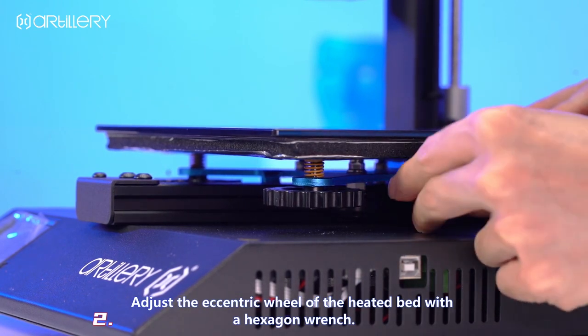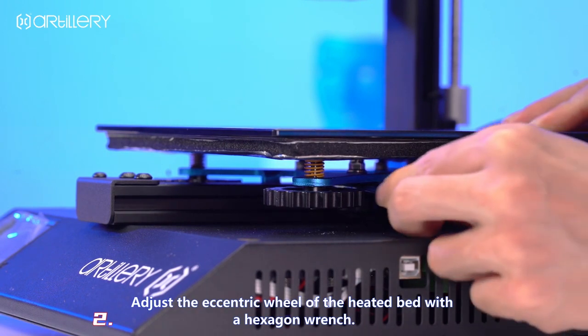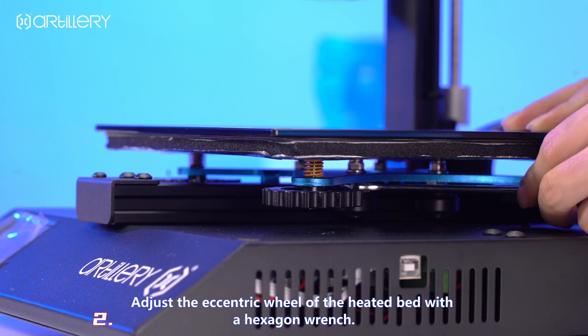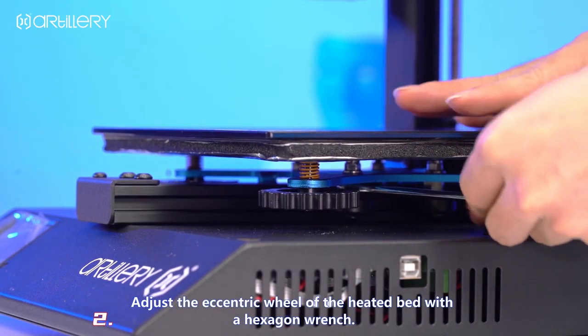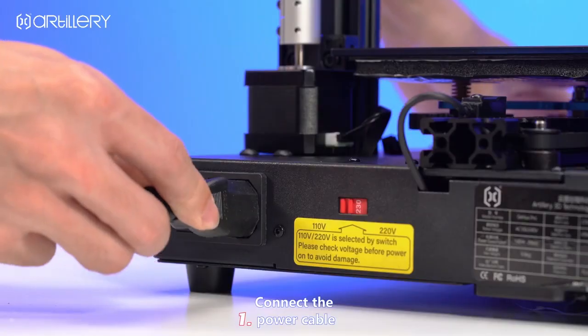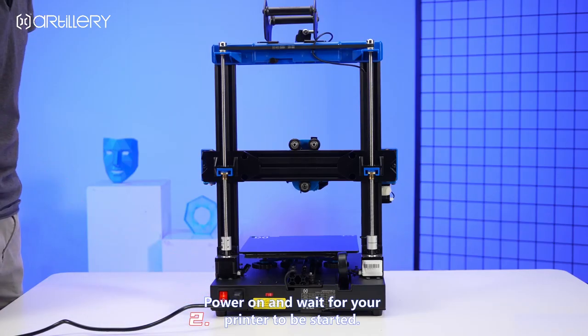Adjust the eccentric wheel of the heated bed with a hexagon wrench to tighten the other slider. Connect the power cable, power on, and wait for your printer to be started.